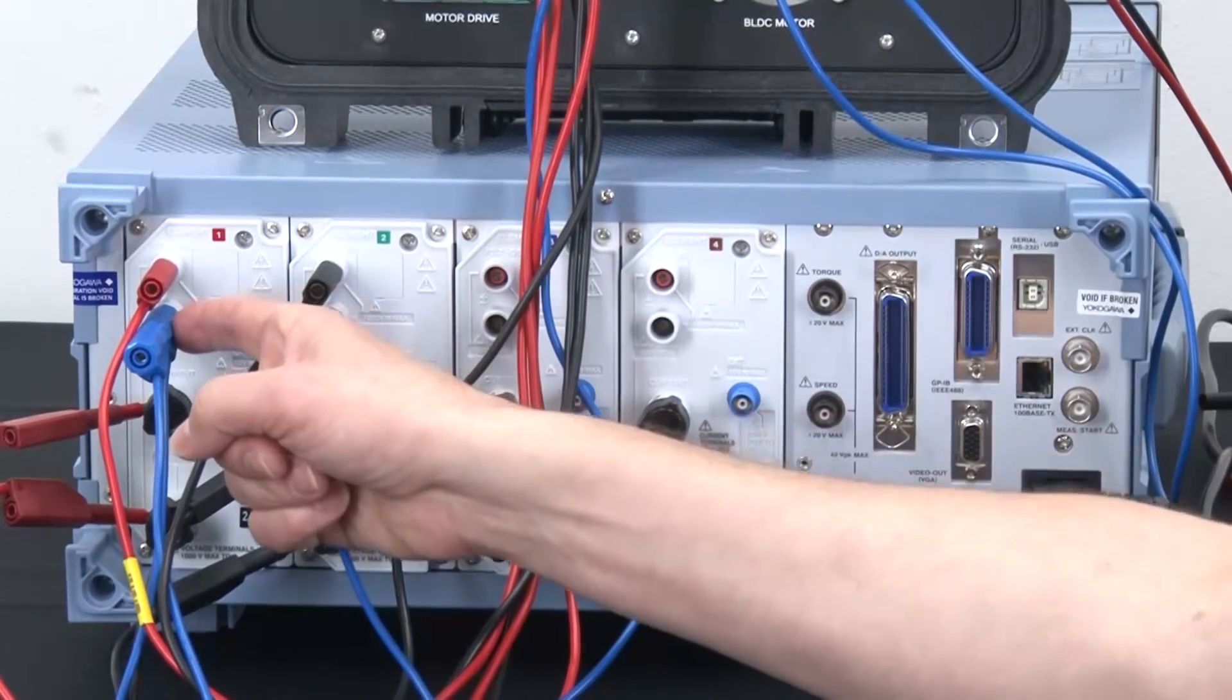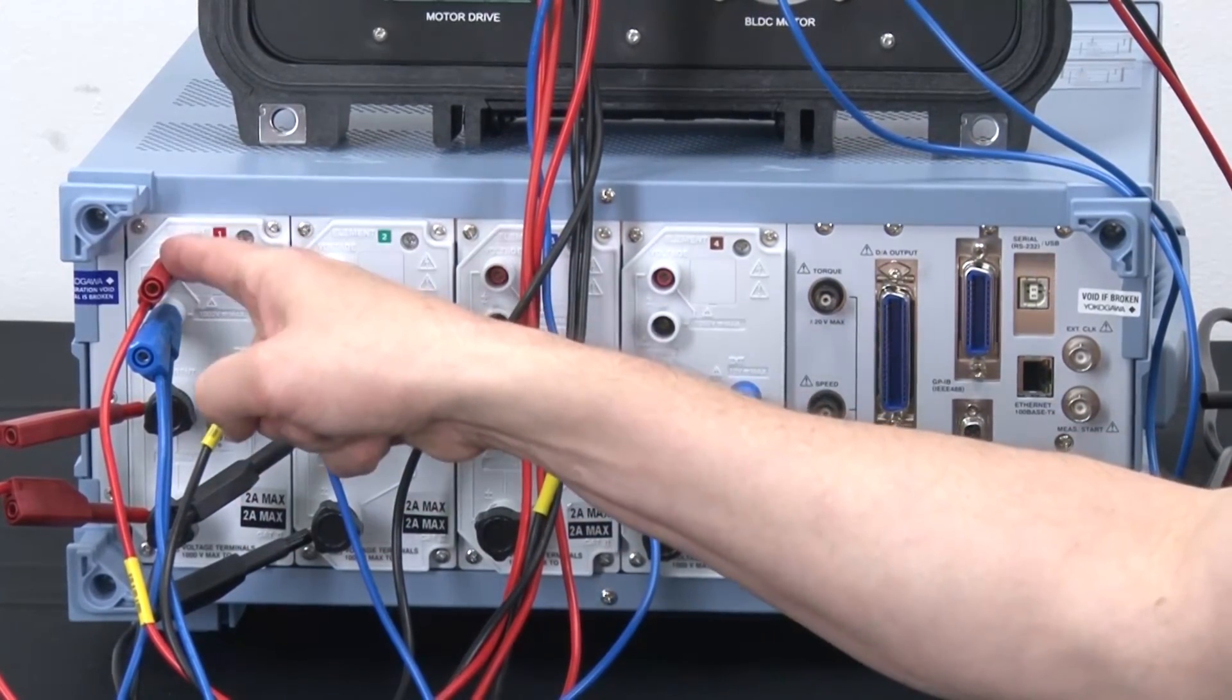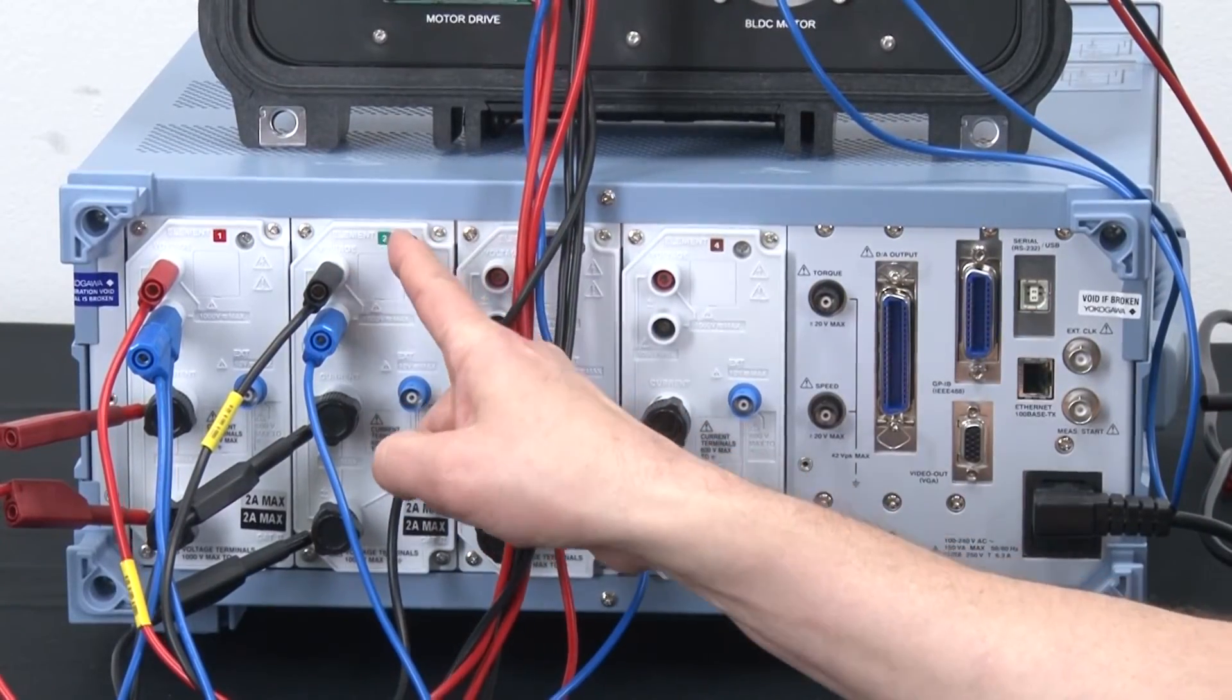So for voltage inputs, phase R, the red wire goes to the top of wattmeter one. And phase S goes to the top of the voltage input on wattmeter two.